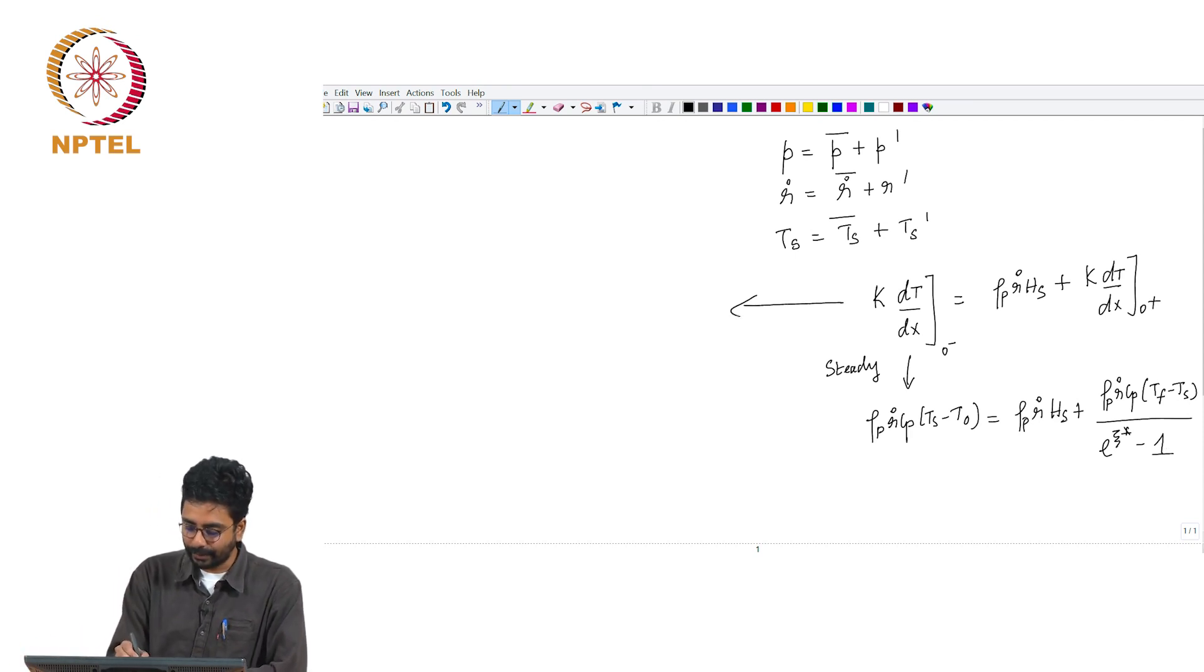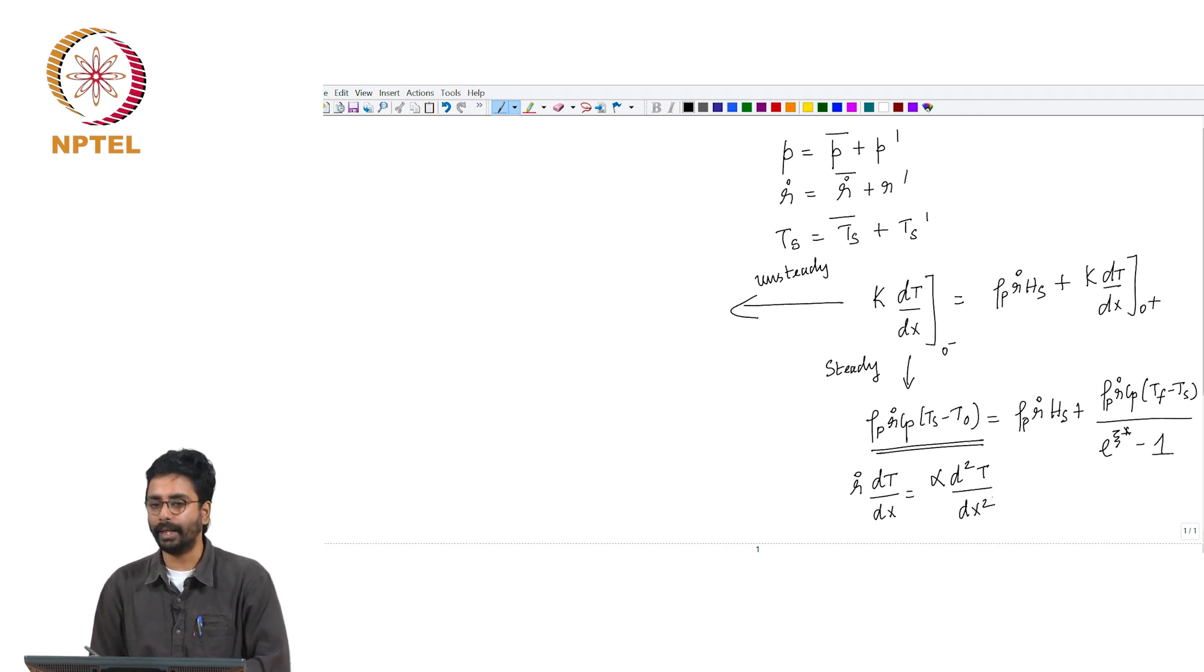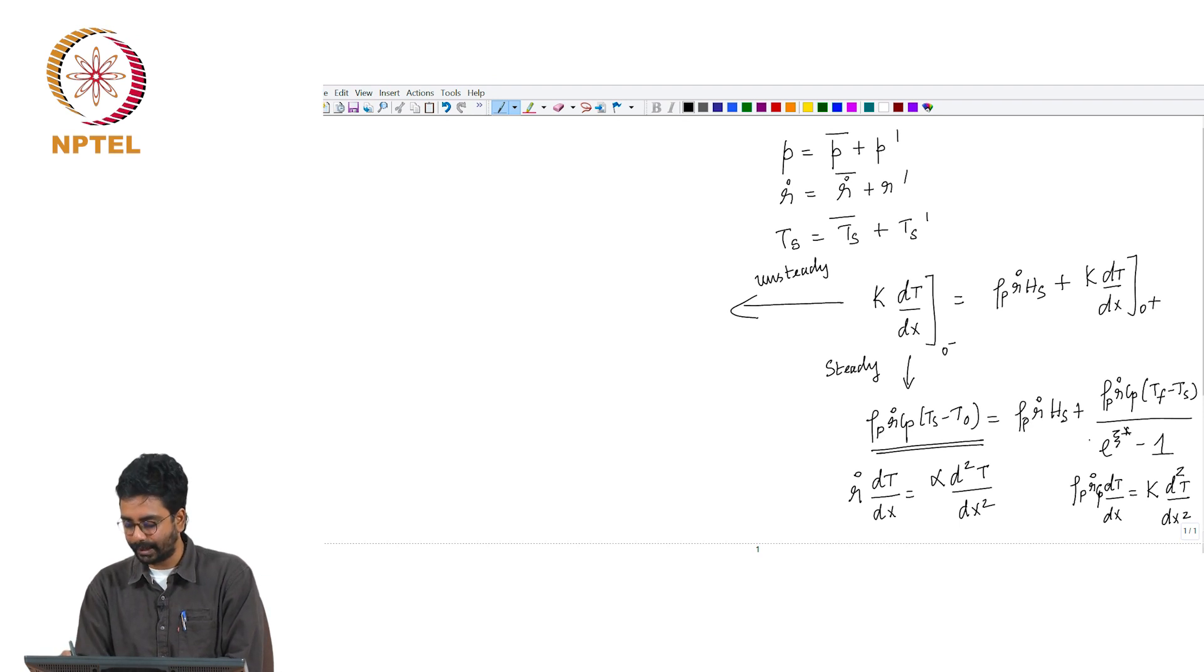When it goes to unsteady, remember that this particular term was obtained as a solution to the steady conduction equation. This term came from here, this term came from here. Now, when the conditions are not steady, we cannot use the steady conduction equation.